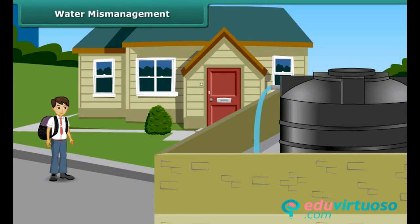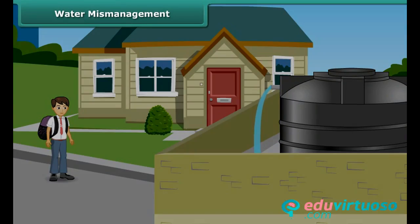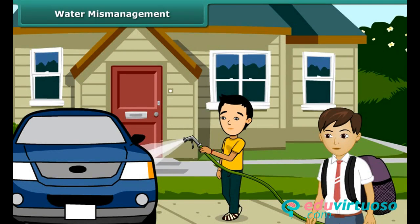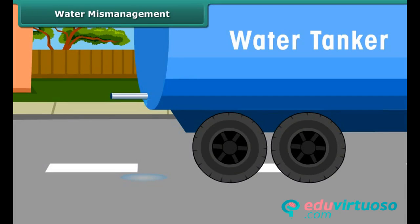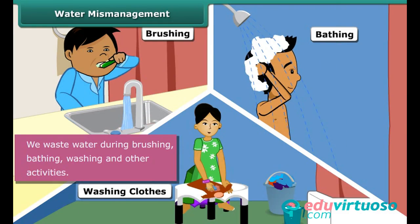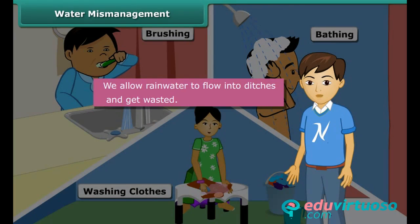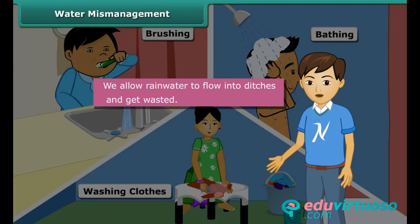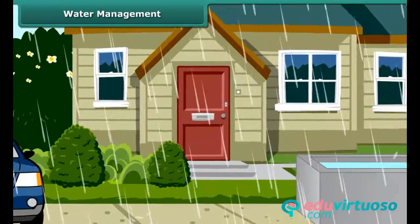On your way to school, you notice water overflowing from overhead tanks, people using running water to wash their cars, and water leaking from a tanker. All of us, knowingly or unknowingly, waste water during brushing, bathing, washing and other activities. We also allow rainwater to flow into ditches and get wasted. Fresh water is renewable, but it is finite and gets depleted by mismanagement and indiscriminate use.